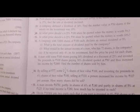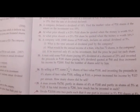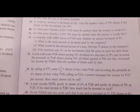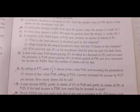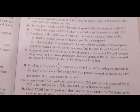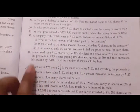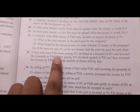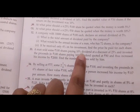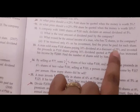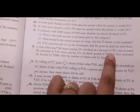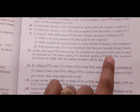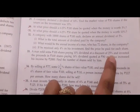Hello learners. In this video I am going to start question number 33. A man sold some rupees 100 shares paying 10% dividend at a discount of 25%. The face value of the shares was 100 rupees, and since the shares were at a 25% discount, the market value must be 75 rupees — that is 100 minus 25, which equals 75 rupees.